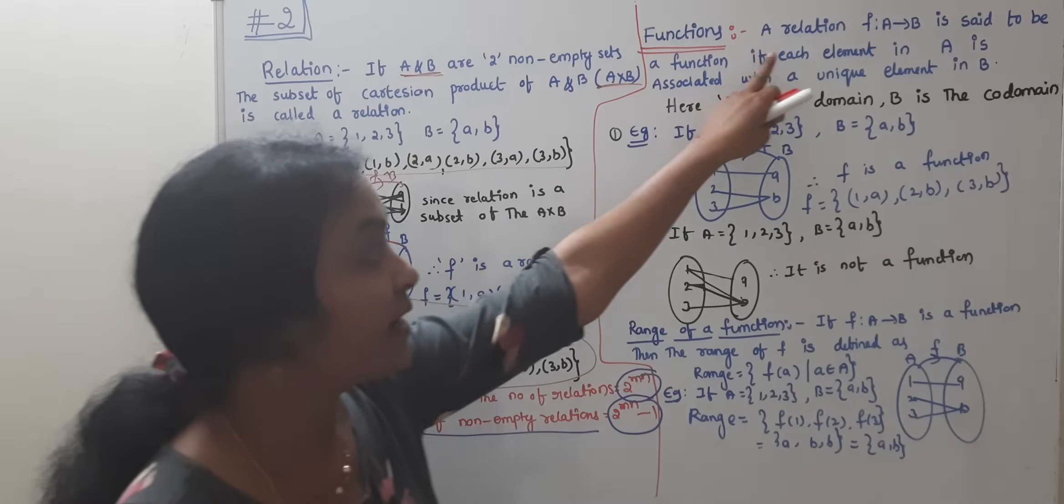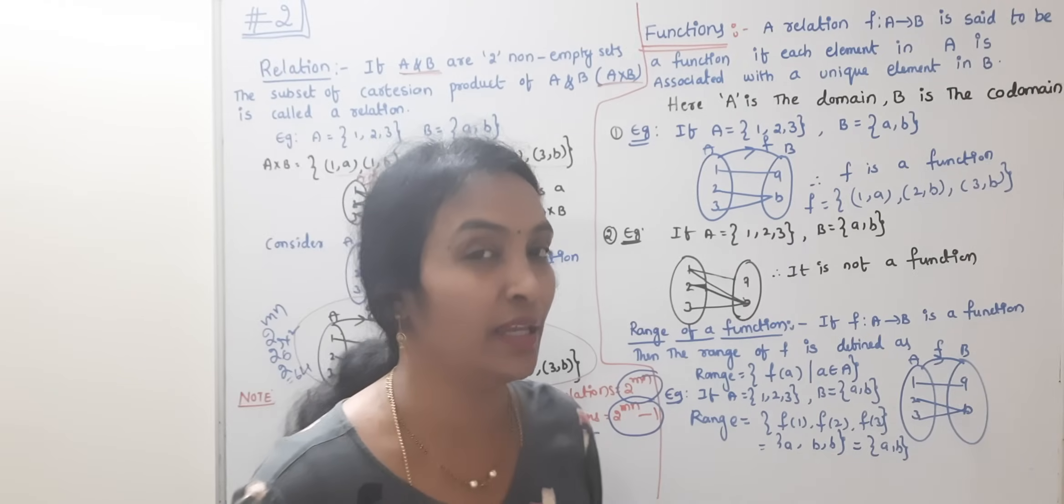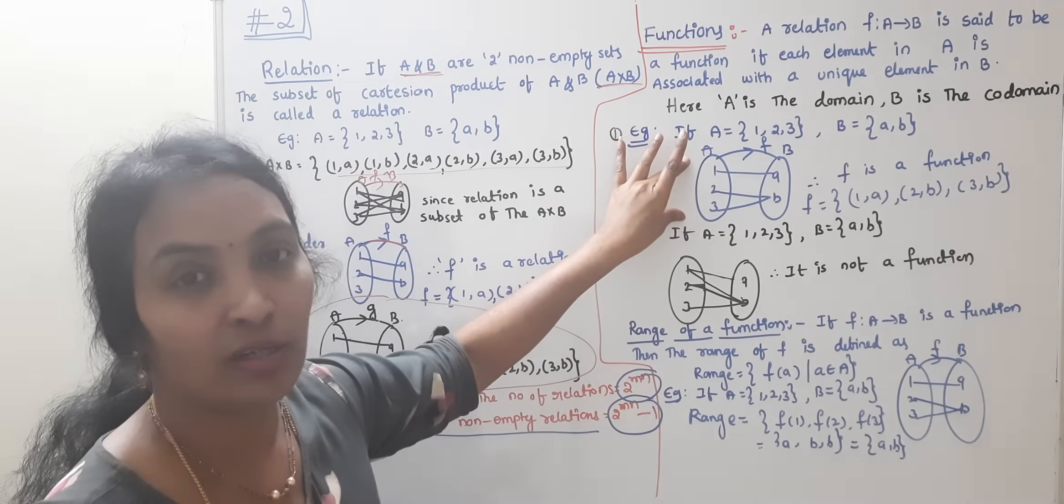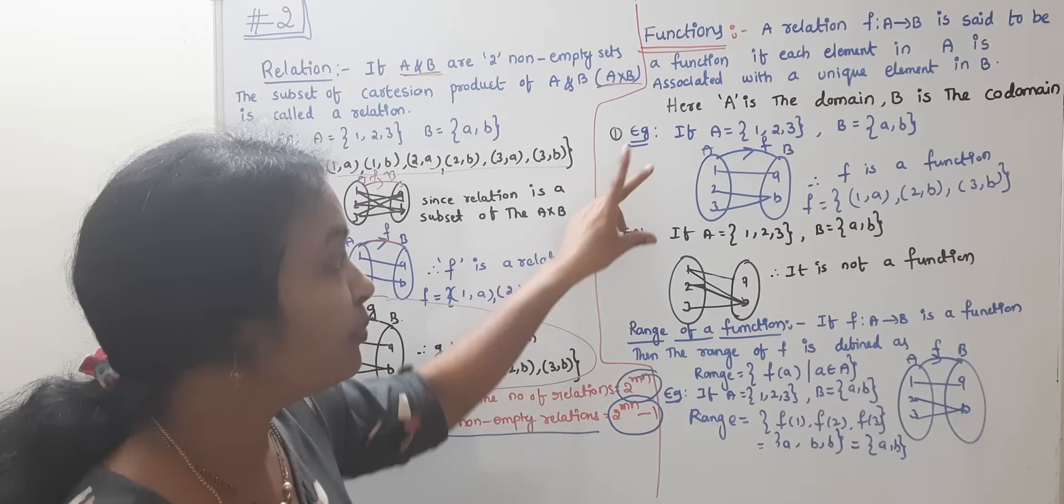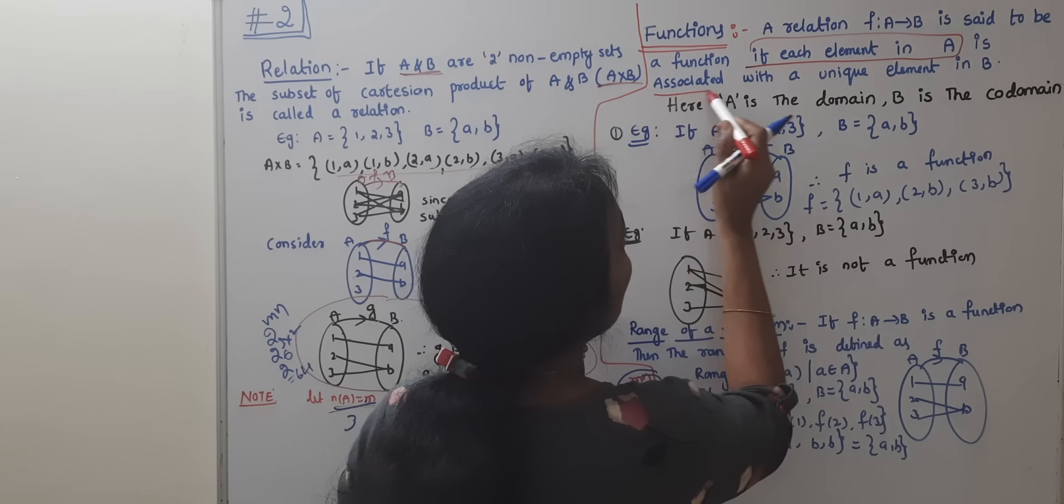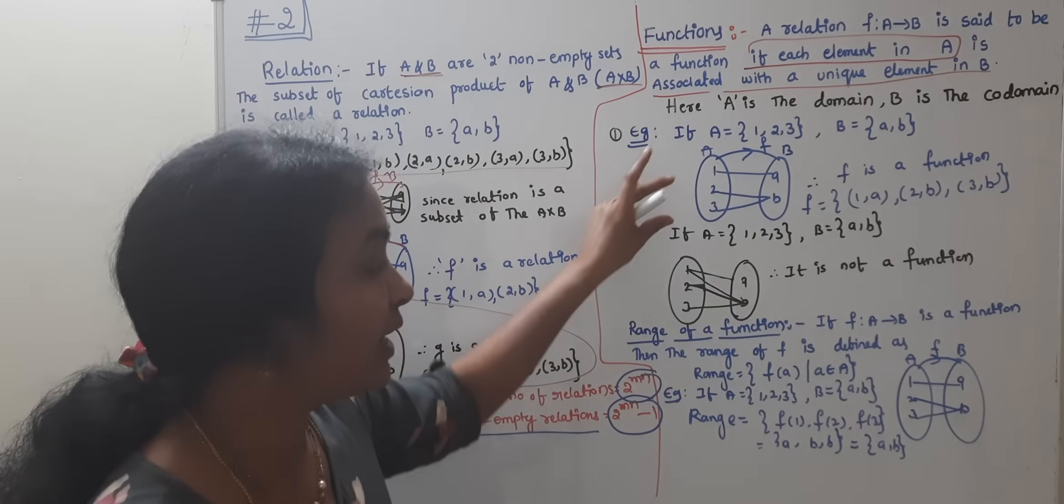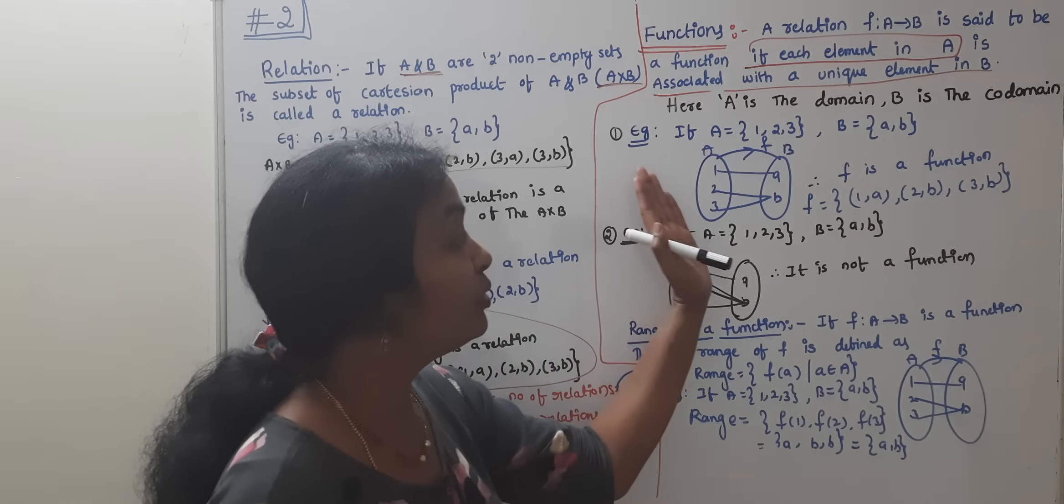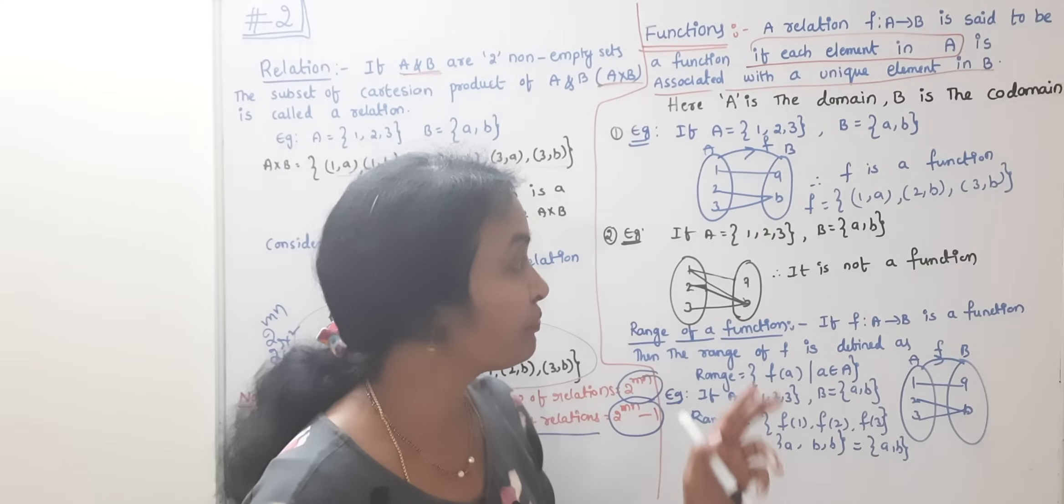What is a function? A relation f from A to B is a function if each element of A is mapped with at least one element of B. Each element of A is mapped with or is associated with unique elements in B.